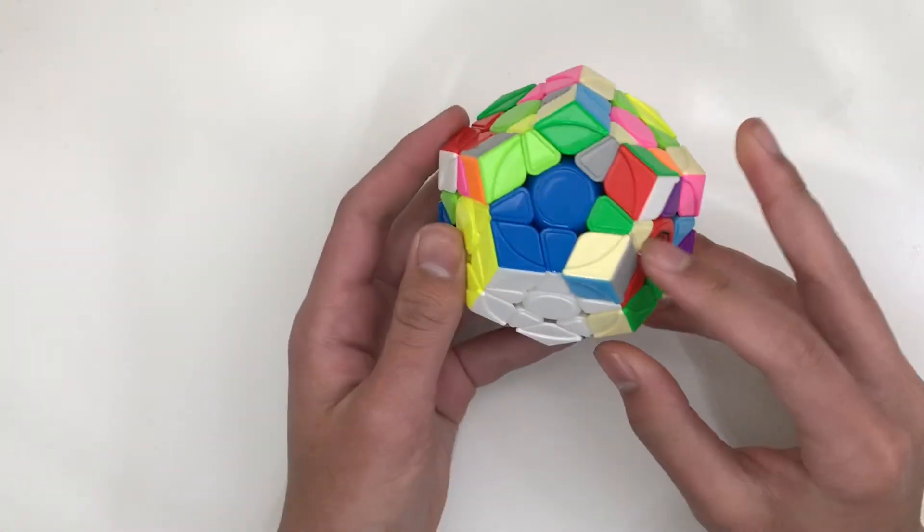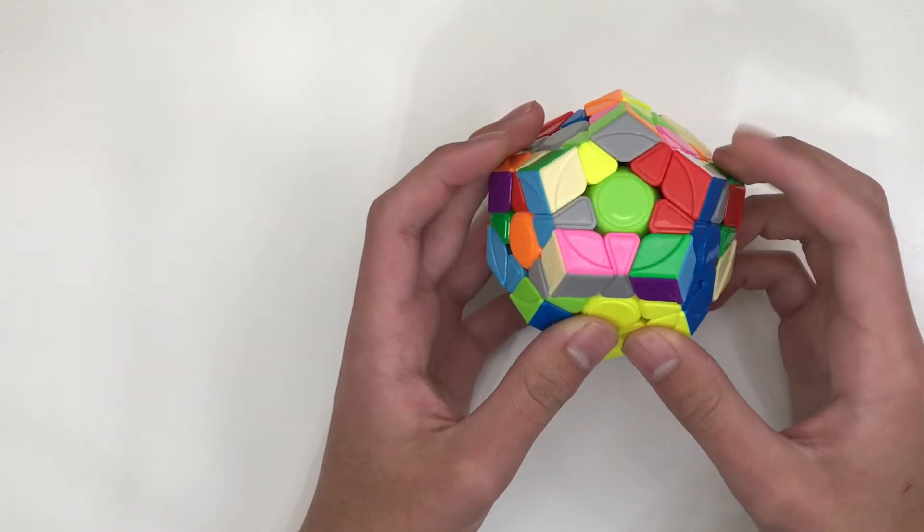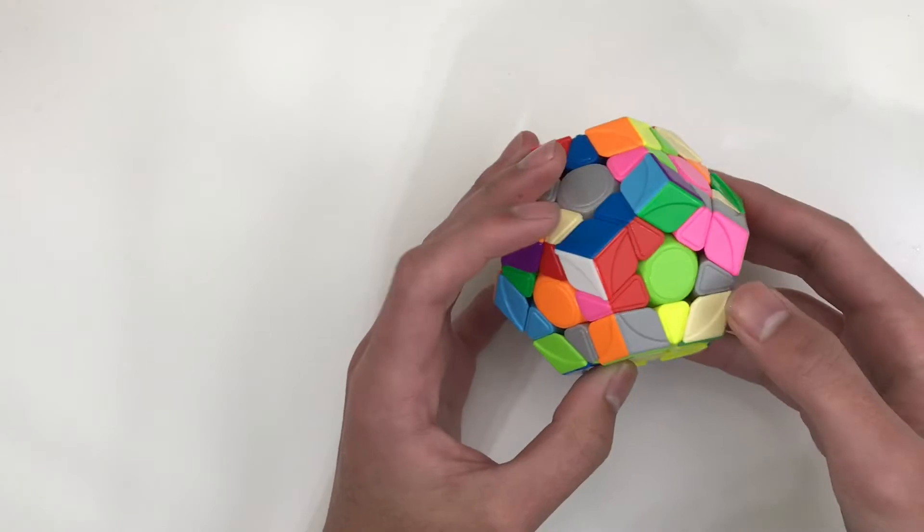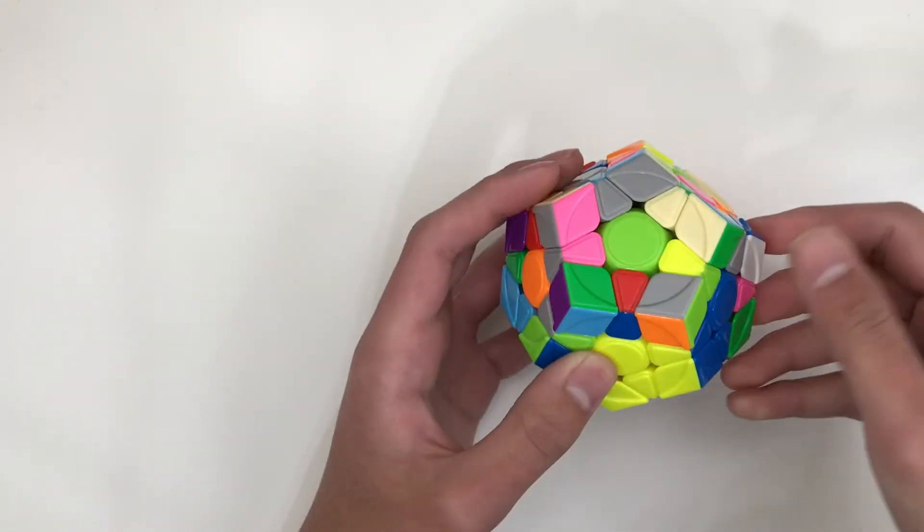So for example, if your pair's over here, and your slot's over here, it doesn't matter what position it's in on this layer, you can insert it like here, or if it's here, you can do U2, U2', U'.